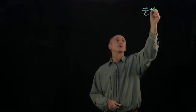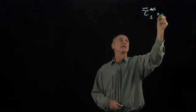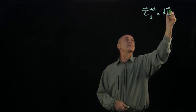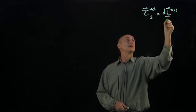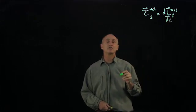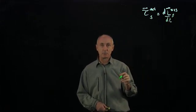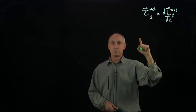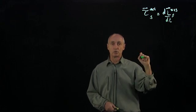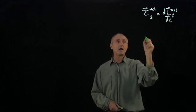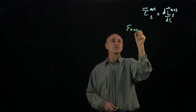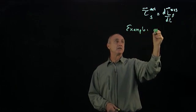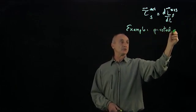Let's consider examples of our principle that the external torque about a point S causes the angular momentum of the system to change about S. We've examined central force problems in which we chose the point S to be the central point where there was no torque. Now, as examples, let's look at a case where we have a pivoted object.